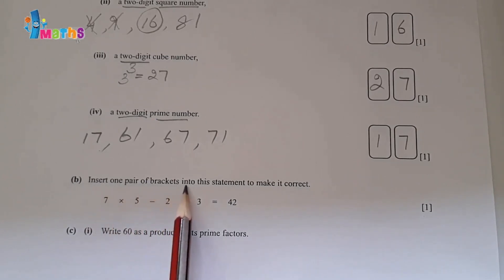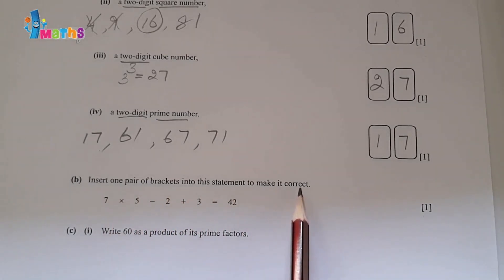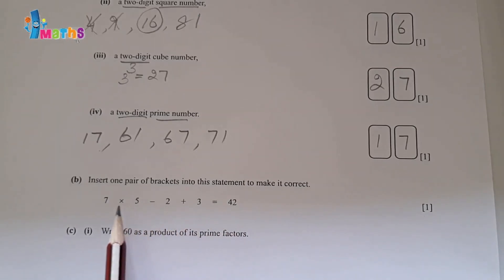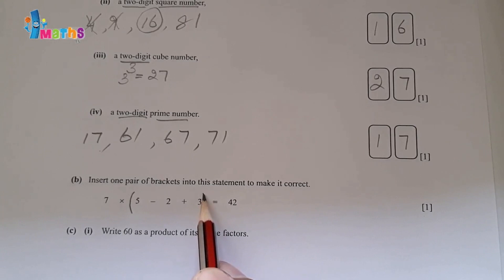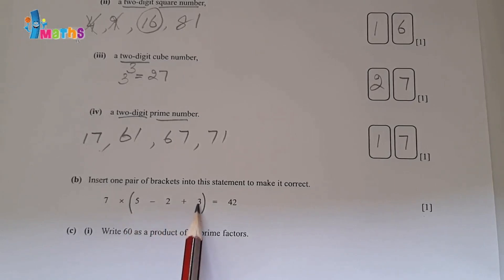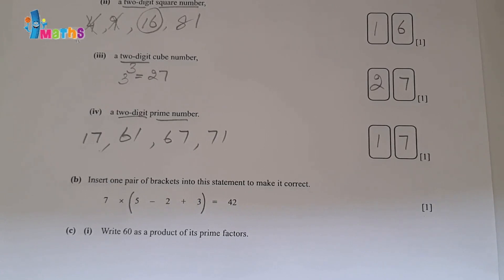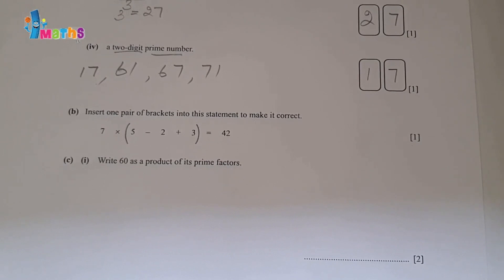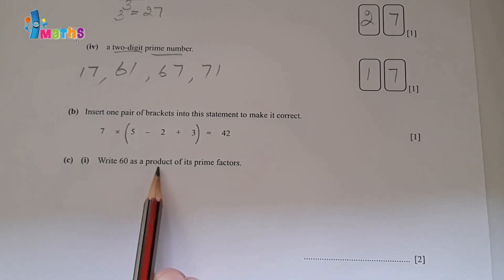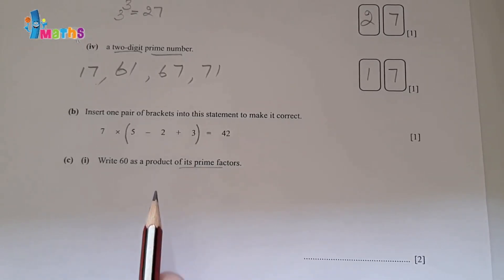Part B: insert one pair of brackets into the statement to make it correct. We put brackets around 5 minus 2. Solving the bracket first: 5 minus 2 equals 3, then 3 plus 3 equals 6, and 6 multiplied by 7 equals 42. So the statement is correct with the brackets placed there.